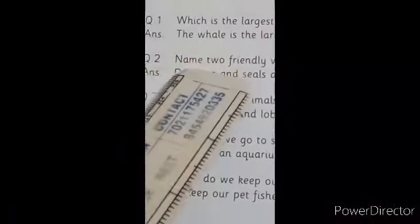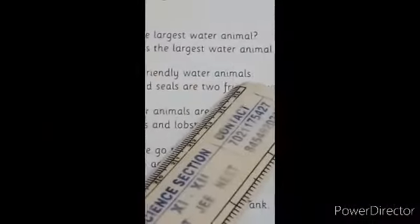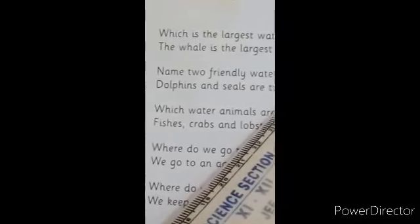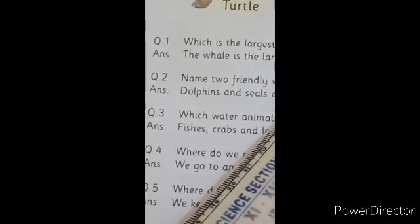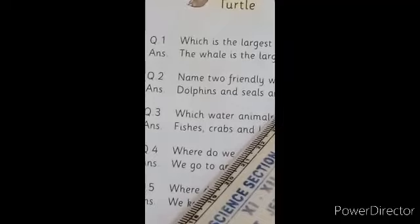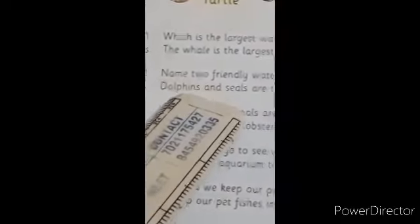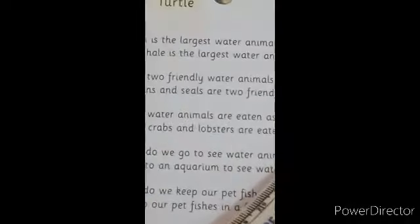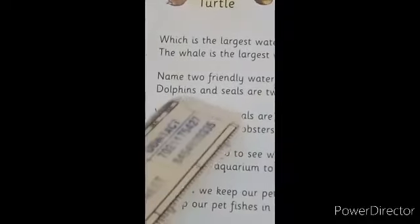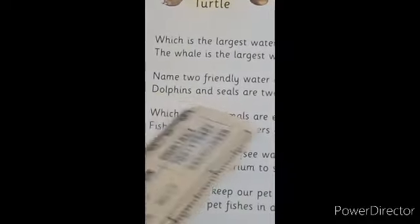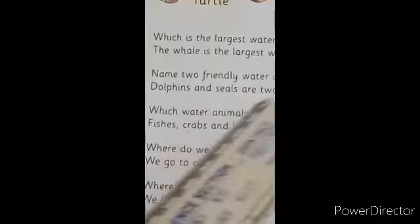Question number 2. Name two friendly water animals. Bacchon, jo paani mein januar rehti, usmein jo friendly hai, unka friend hai, unka naam batana hai aapko. Answer. Dolphins and seals are two friendly water animals. Bacchon, jo paani ke do januar hai, uska naam hai dolphins and seals, jo friendly rehti hai.